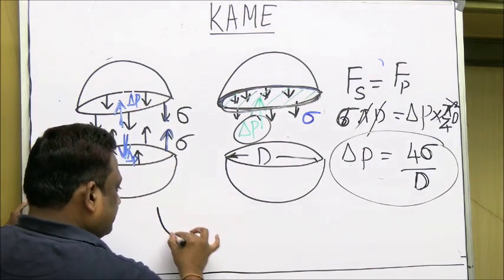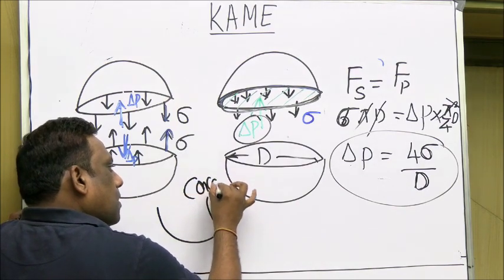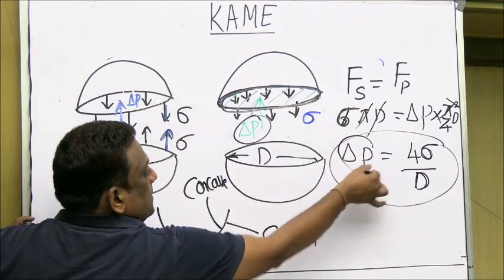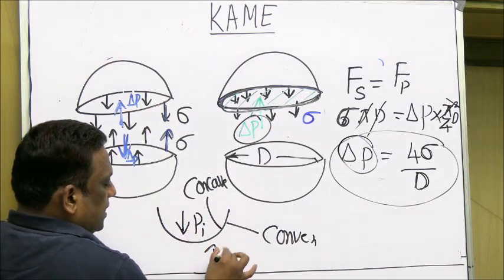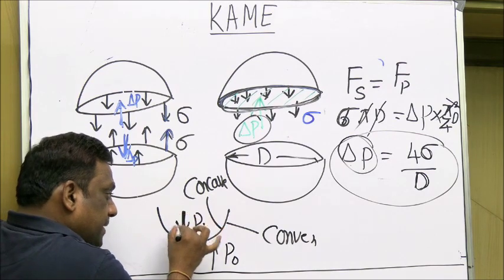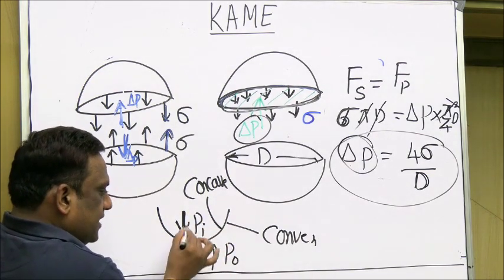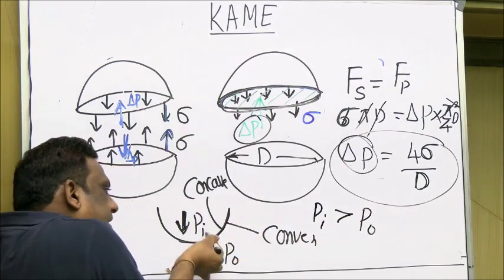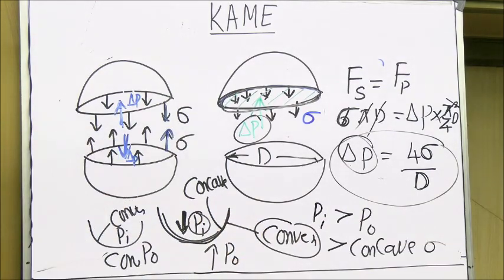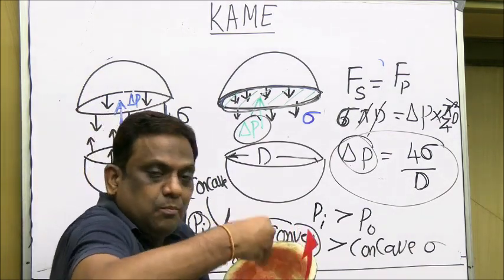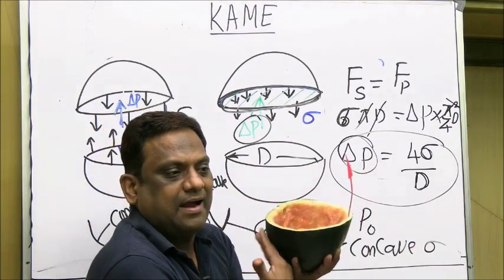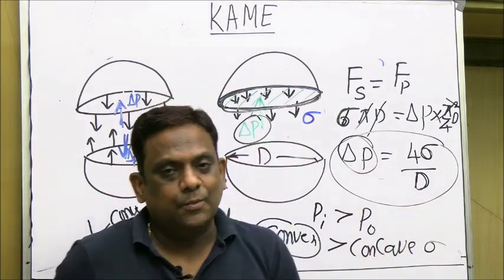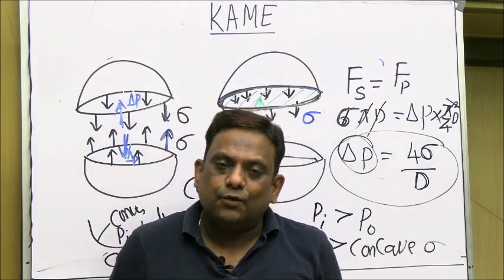The inside surface is concave and the outside is convex. We calculated excess pressure: PI (inside) is greater than P0 (outside). So on the concave side, pressure is more than on the convex side — concave-side pressure is greater than convex-side pressure because of surface tension. Thank you, my dear students. I will be coming up with more such video lectures. Thank you for watching. God bless you.